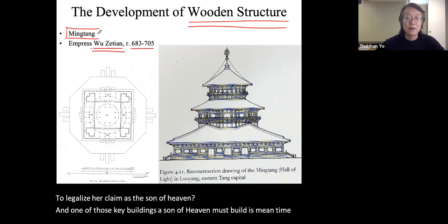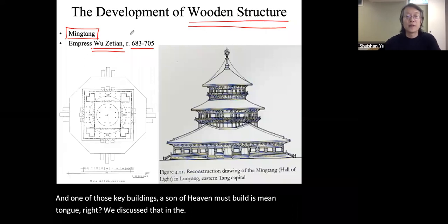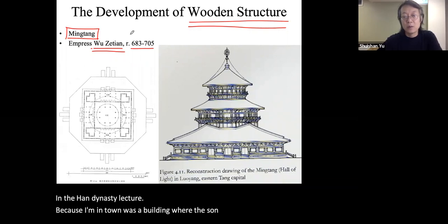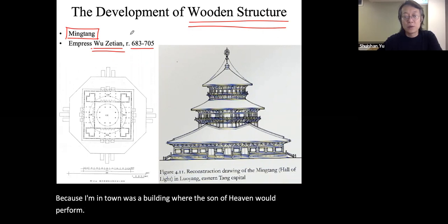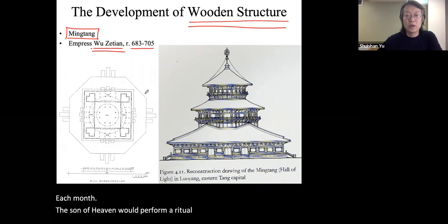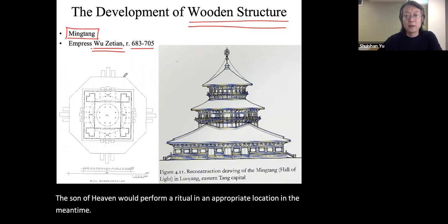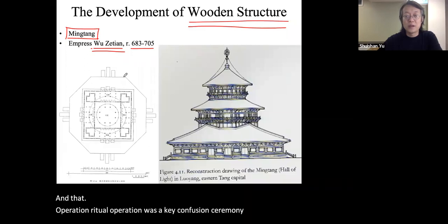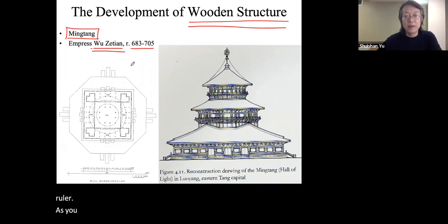Ming Tang was a building where the Son of Heaven would perform cyclic rituals following the cycle of the universe. Each month the Son of Heaven would perform a ritual in an appropriate location within the Ming Tang. This ritual operation was a key Confucian ceremony to legitimize a ruler as having the mandate of heaven—and Empress Wu also built one.